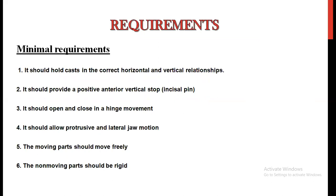Coming to the requirements of an articulator: it should hold the cast in the correct horizontal and vertical relationships. Second, it should provide a vertical positive anterior stop, which is called the incisal pin. Third, it should open and close in a hinge movement. Fourth, it should allow protrusive and lateral jaw motion — lateral jaw motion means side-to-side movement. Fifth, the moving parts should move freely and the non-moving parts should be rigid.